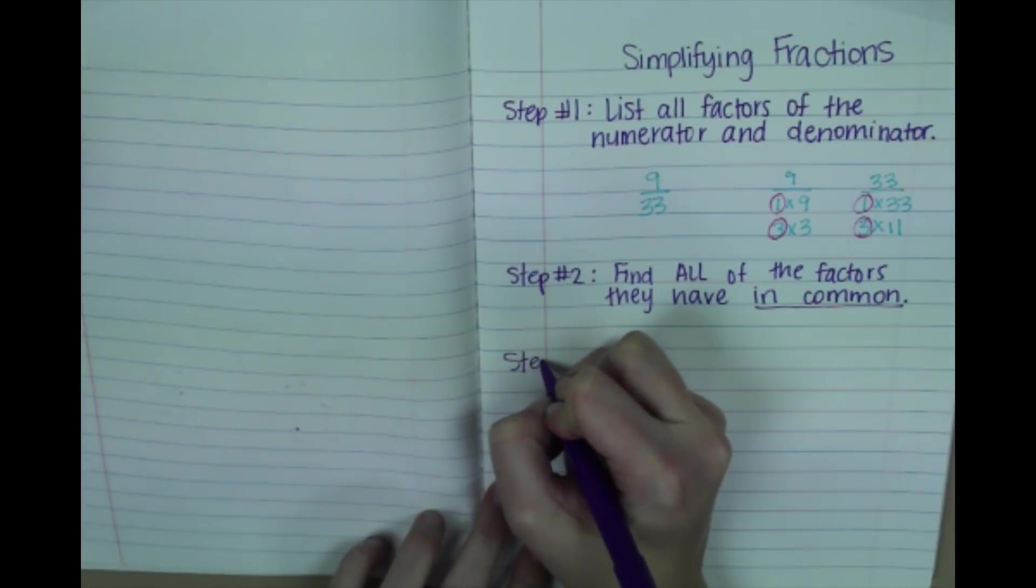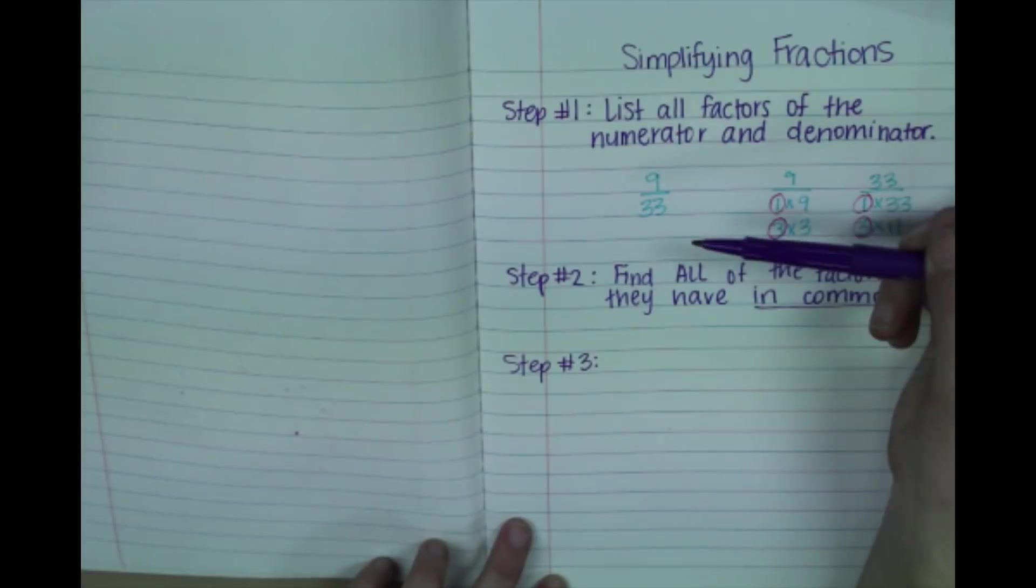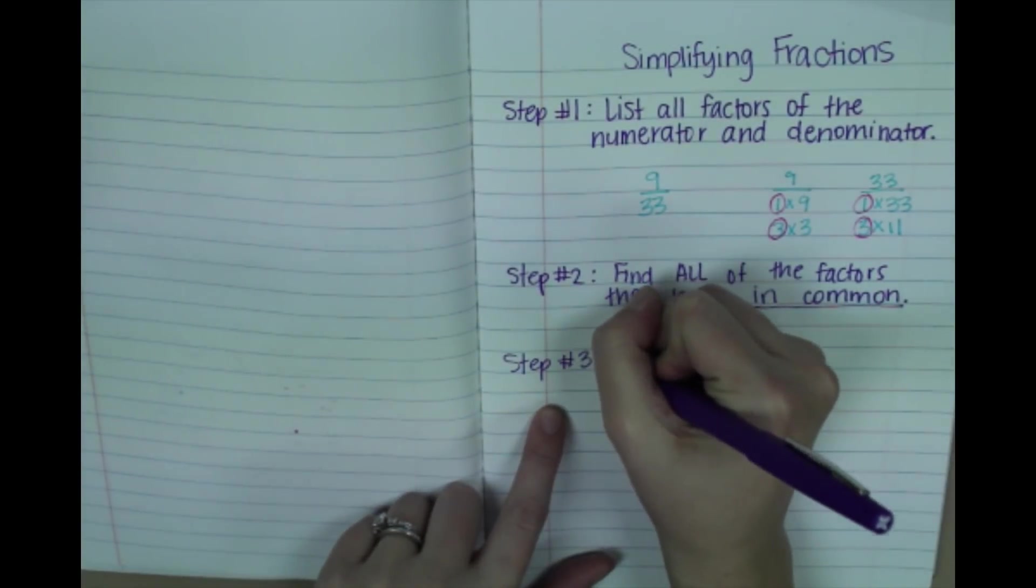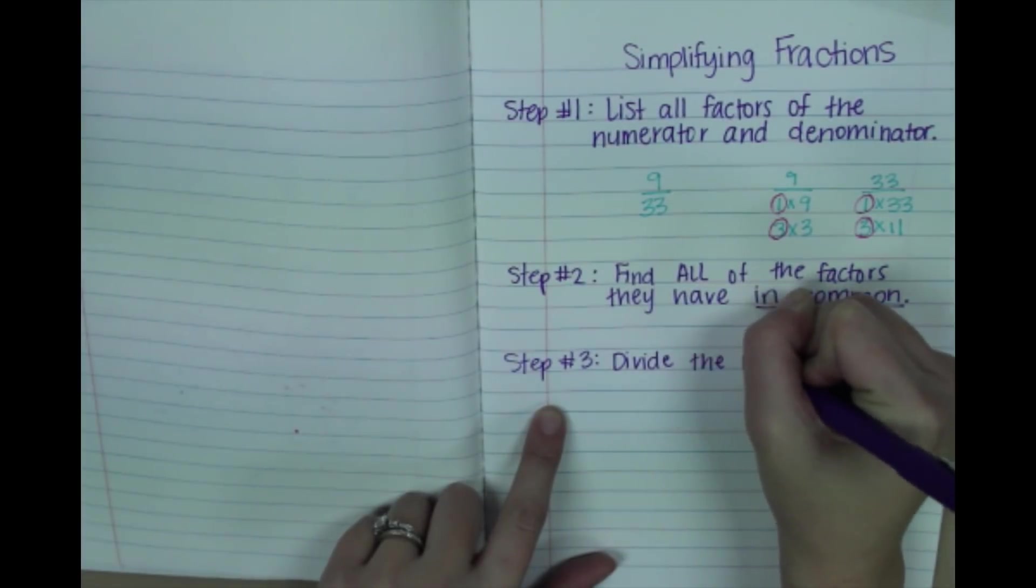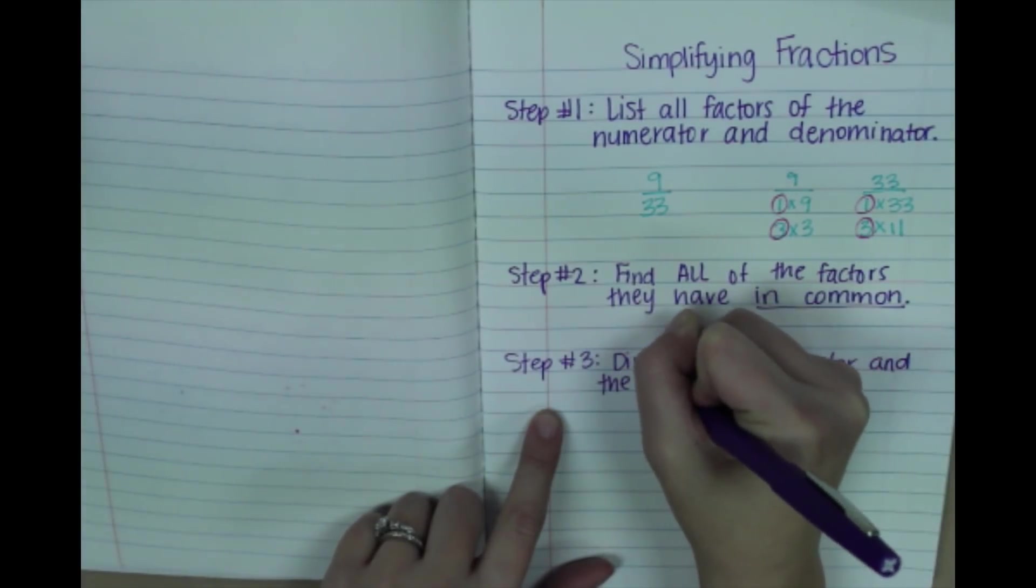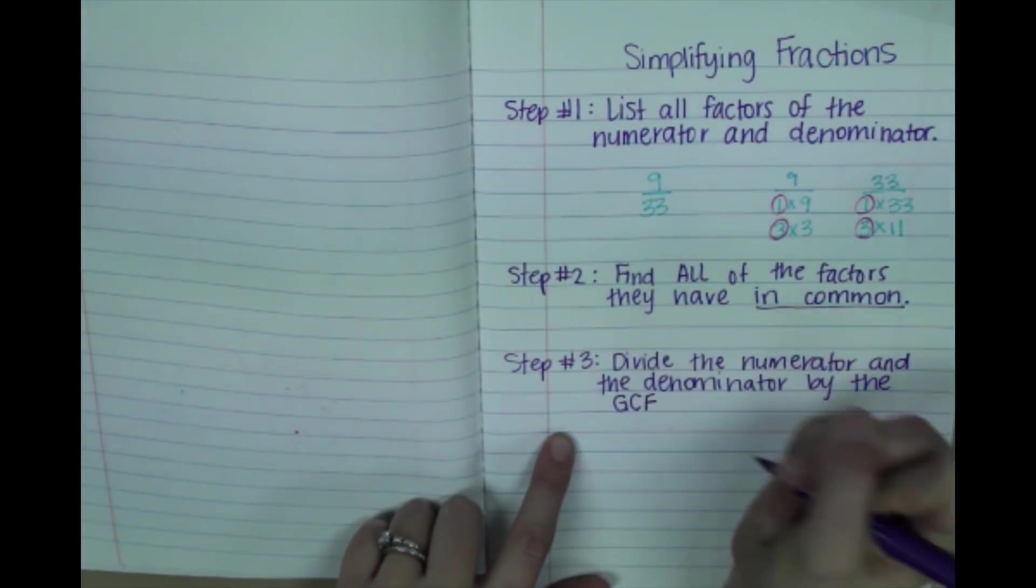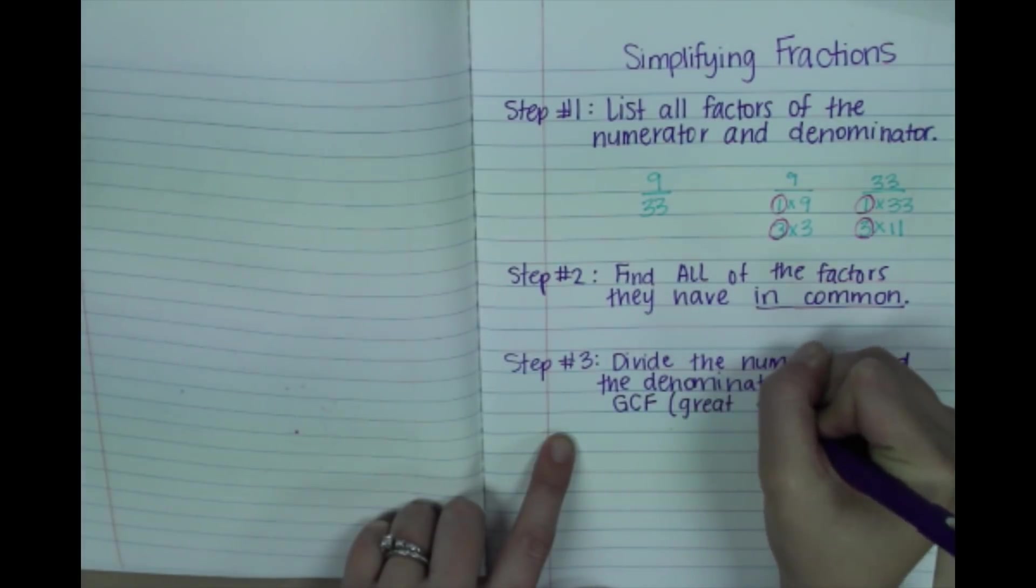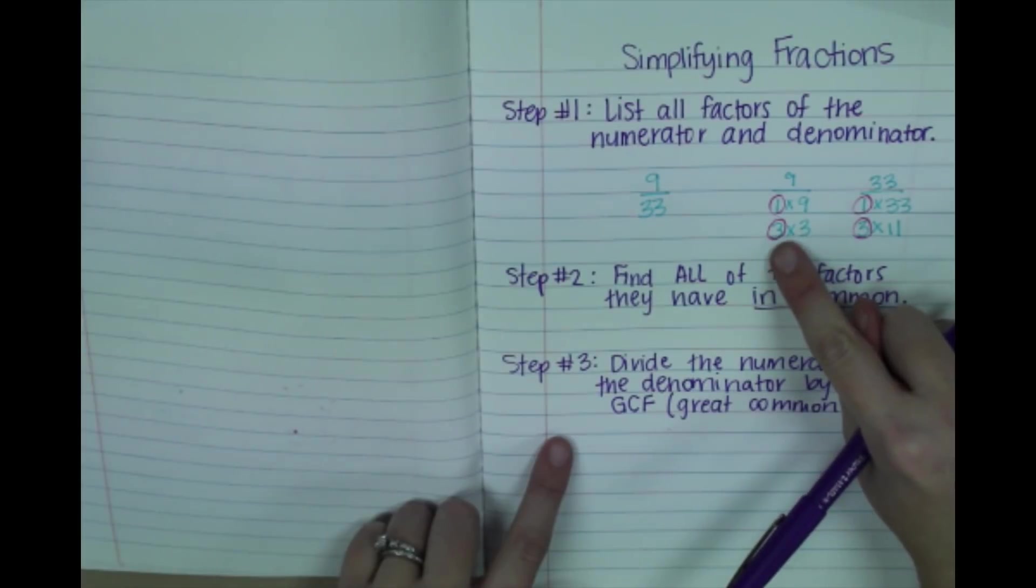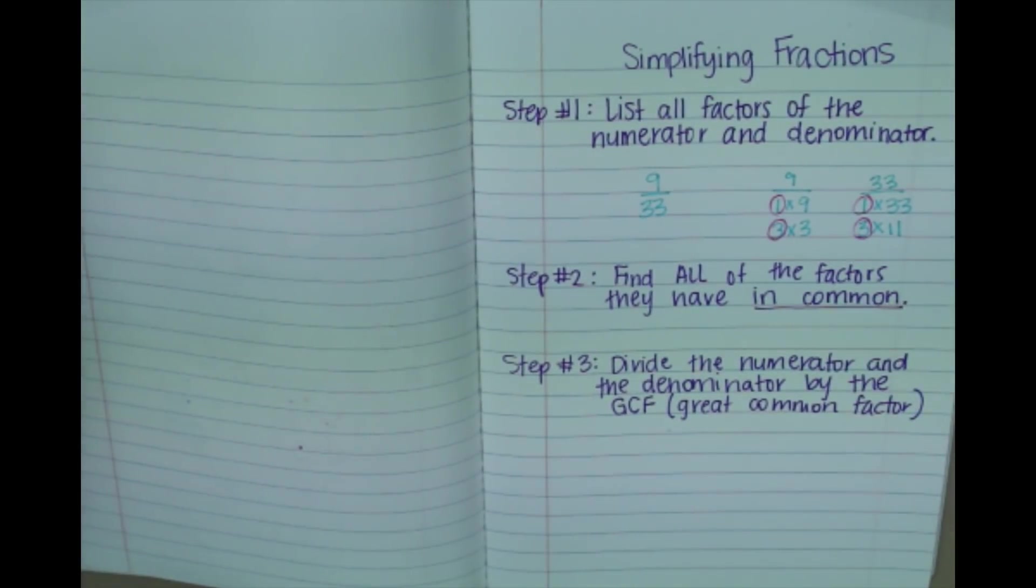Step number 3 is to divide both the numerator and the denominator by the GCF, which stands for the greatest common factor. Now we already have all our factors listed up here, so now we're just looking for the ones they have in common. What is the greatest? Well, 3 is greater than 1. So our GCF is going to equal 3.